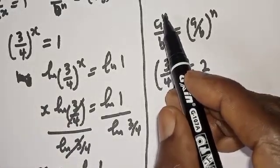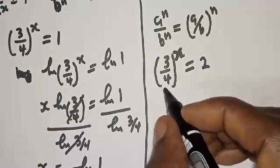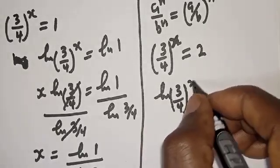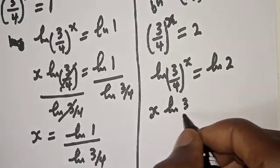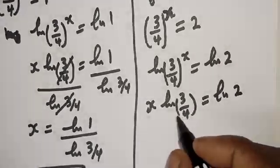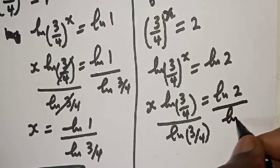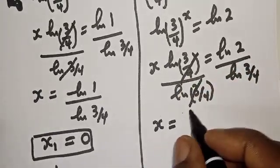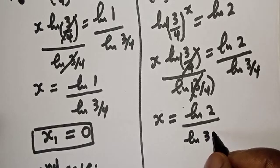Also, take note that a raised to power n over b raised to power n equals a over b raised to power n. Therefore 3 over 4 raised to power s equals 2. Now let's take the log of both sides. We have natural log of 3 over 4 to the power of s equals natural log of 2. So s times natural log of 3 over 4 equals natural log of 2. Dividing both sides by natural log of 3 over 4, s equals natural log of 2 over natural log of 3 over 4.